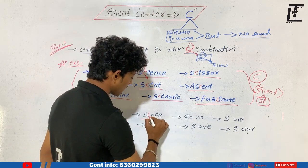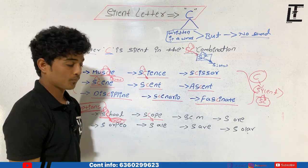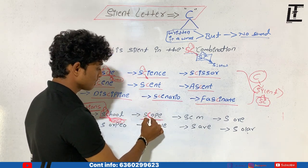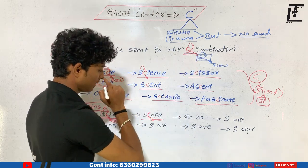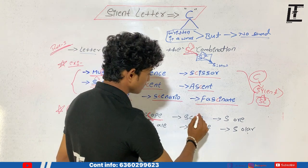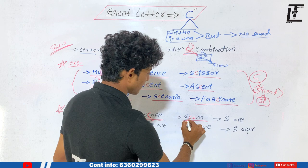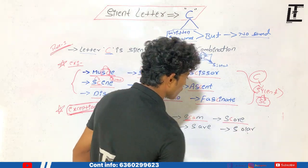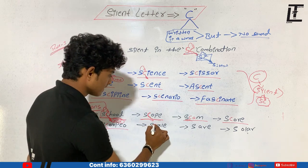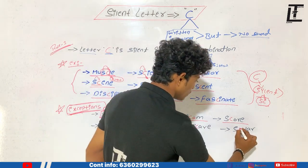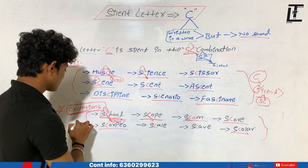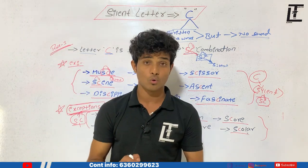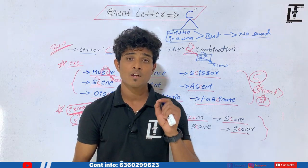In the second exception word, C is again pronounced — that word is 'scope'. We cannot say 'tope', we have to say 'scope'. Similarly, the word 'sconce' — again C is in the SC combination but it is pronounced. We call it 'sconce'. Other exception words include 'scorpio', 'scale', and 'color'. All these words have the SC combination, but they are exceptions which do not follow the rule.